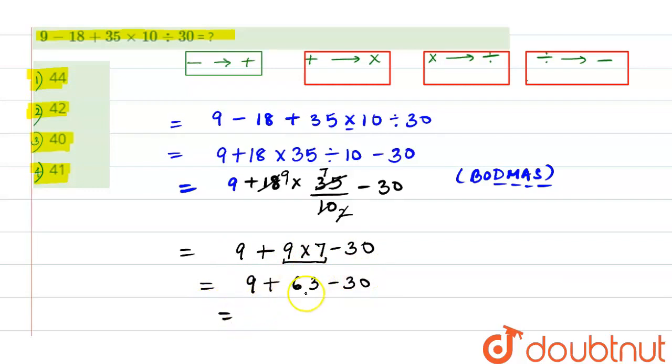So it will be equal to 72 minus 30, which equals 42. So the answer for the given question is 42.